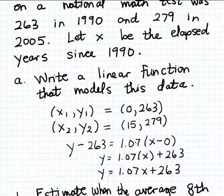So we calculated the slope and then substituted one of the points into the point slope formula to derive the formula for the line. Here are the two points that we used: (0, 263) and (15, 279), and we found those two points by considering this information that's given to us in the description of the problem.